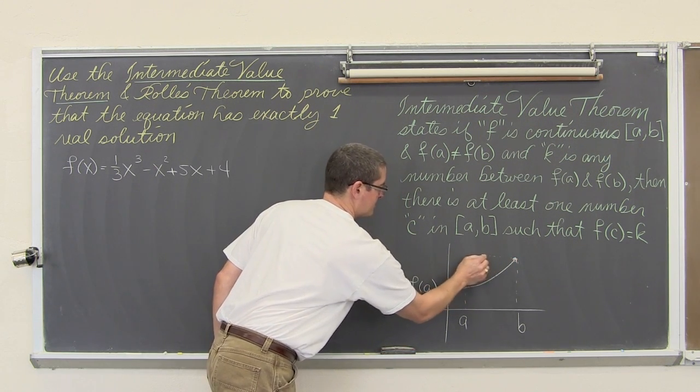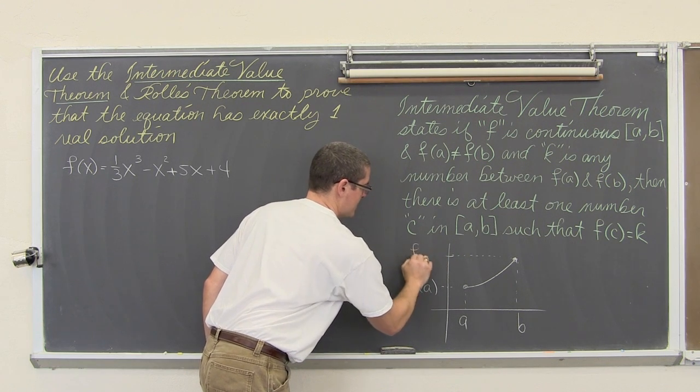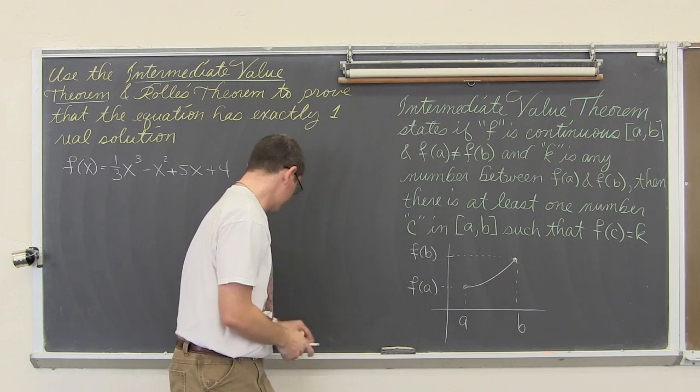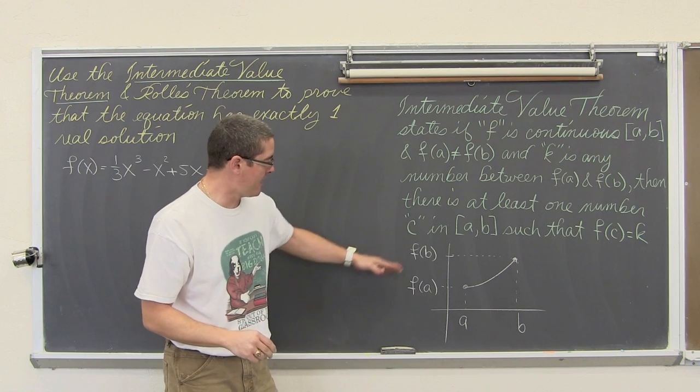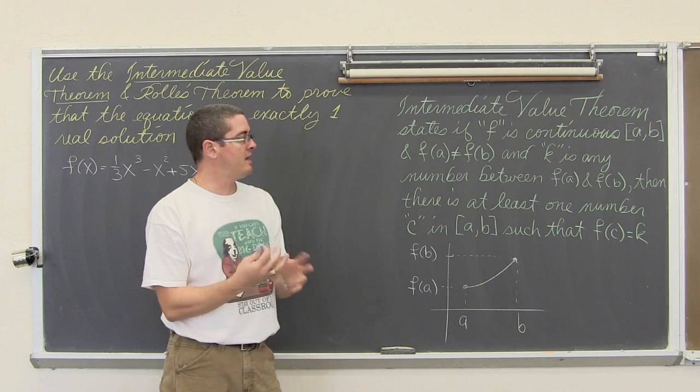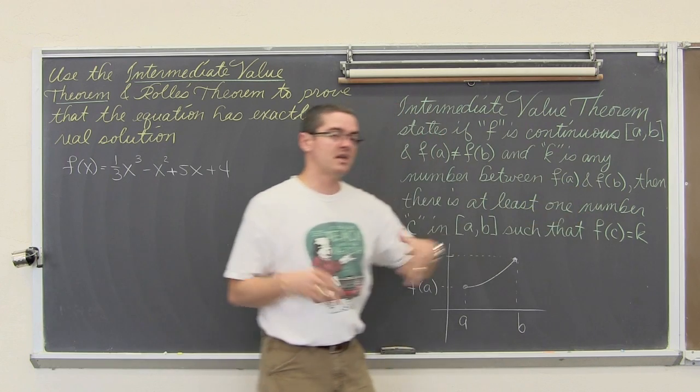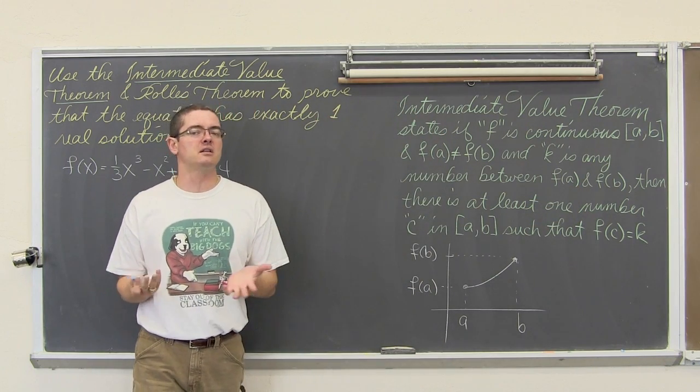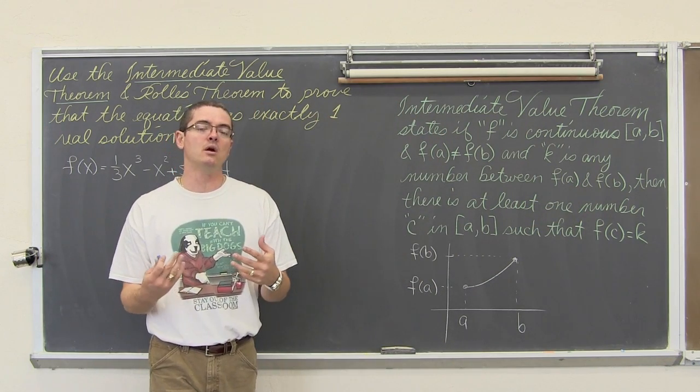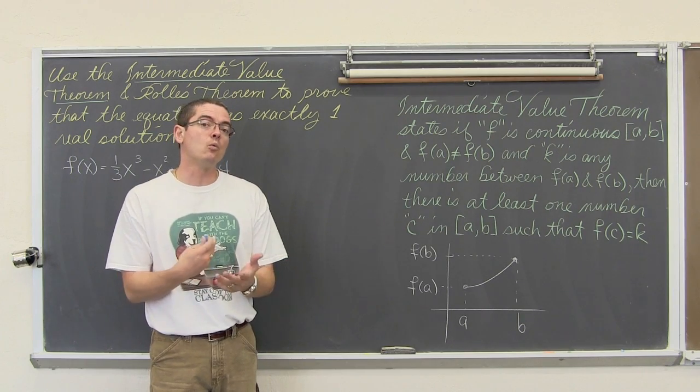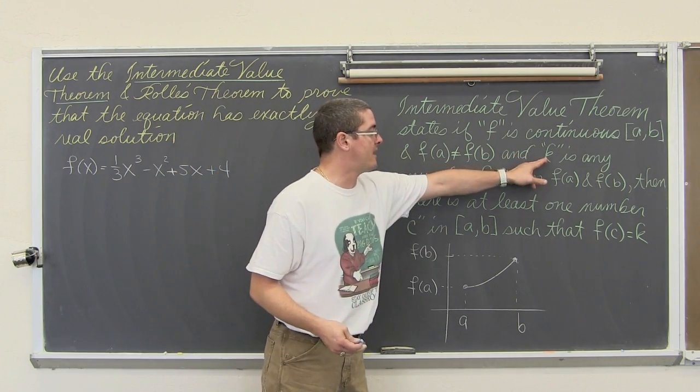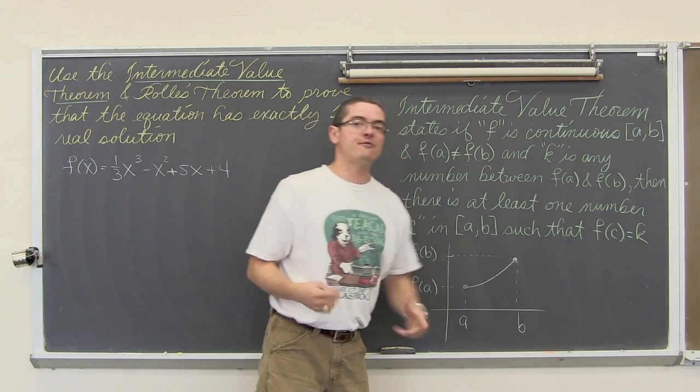This here is f of a, and this here is f of b, and k, let's sneak this in the middle somewhere, k is some number between f of a and f of b. Well it is comparing k to this function notation. Remember function notation is just fancy notation for y.